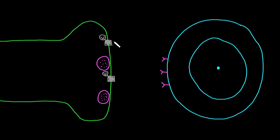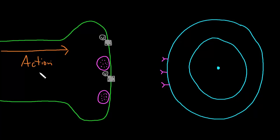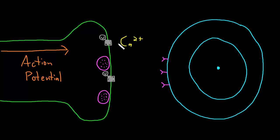We talked about voltage-gated sodium and potassium channels when we discussed the action potential. But at the axon terminal, there are voltage-gated calcium channels that play a big role in neurotransmitter release. When the action potential comes down the axon and reaches the axon terminal, it changes the membrane potential and opens these voltage-gated calcium channels, causing calcium to flow in because it's at a much higher concentration outside than inside the neuron.